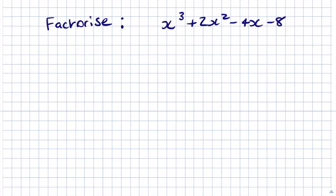Using both methods — by inspection and using the factor theorem with polynomial division — we can now try to factorise the equation x³ + 2x² - 4x - 8. Let's first look at the method by inspection.